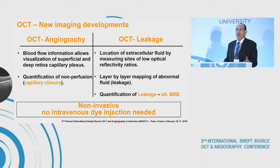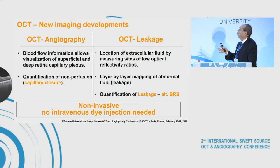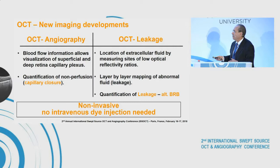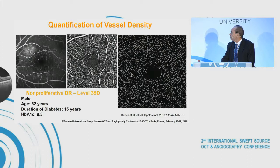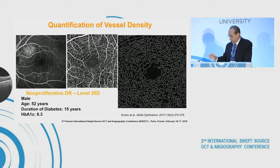With this as a basis, we tried to look with new imaging modalities, like OCT angiography and OCT leakage. OCT leakage means location of extracellular fluid by low optical reflectivity ratios in the retina. In diabetic retinopathy, you are looking with OCT angiography essentially at capillary closure. You can see binarization of the deep and superficial nets, identify sites of focal closure, and quantify it overall.